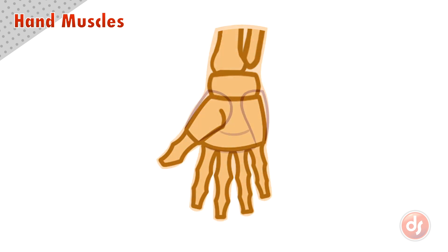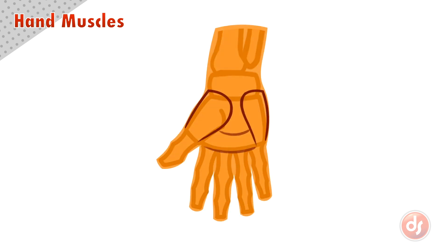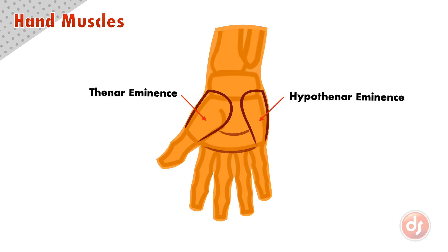On the palm side of the hand, the large rounded mass on the thumb side is called the thenar eminence. The mass on the pinky side is called the hypothenar eminence, meaning opposite of the thenar. The thenar eminence connects to the thumb, making a drumstick shape on the surface. The hypothenar eminence is longer and thinner, appearing more like a teardrop shape.